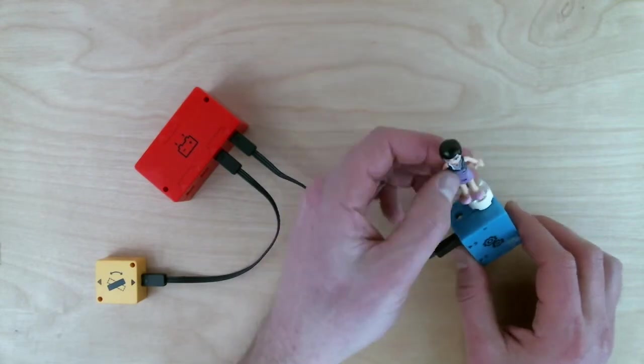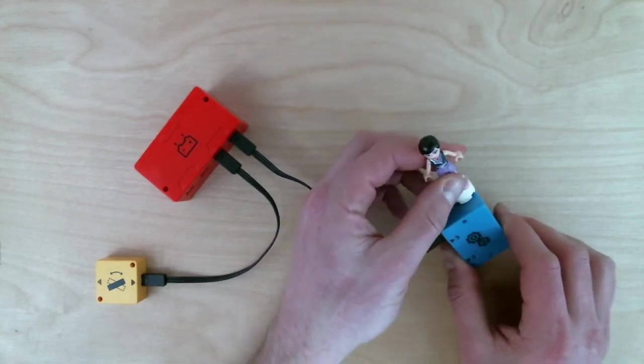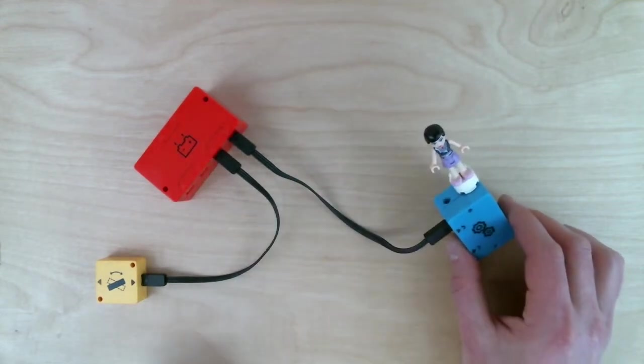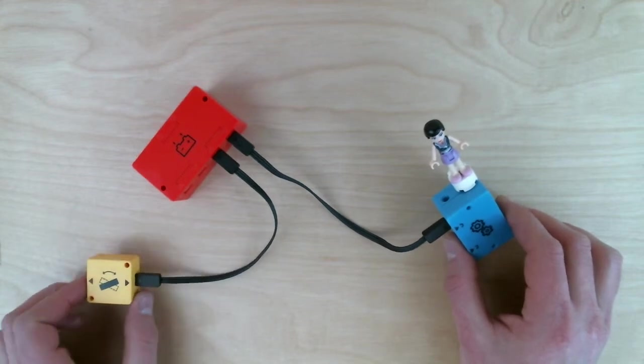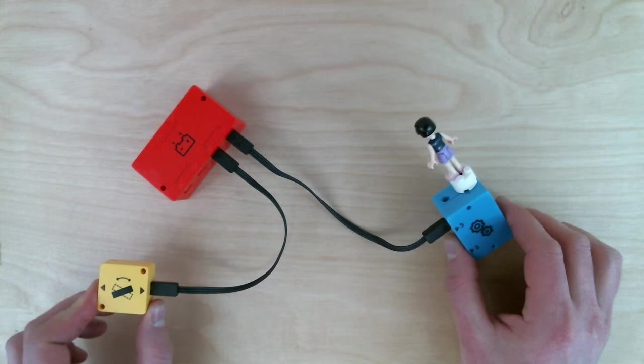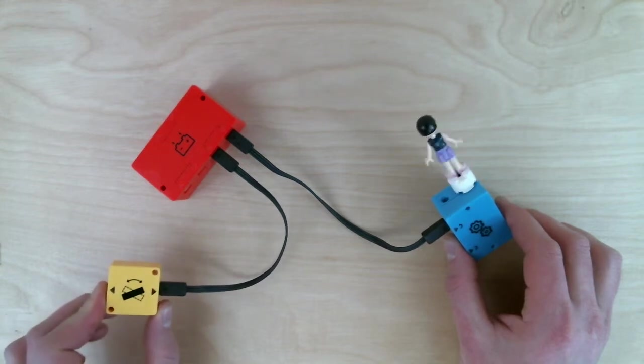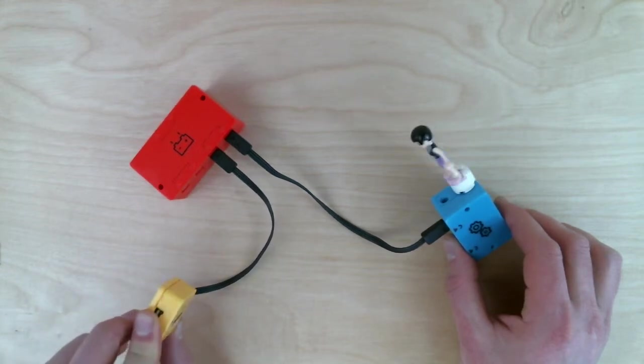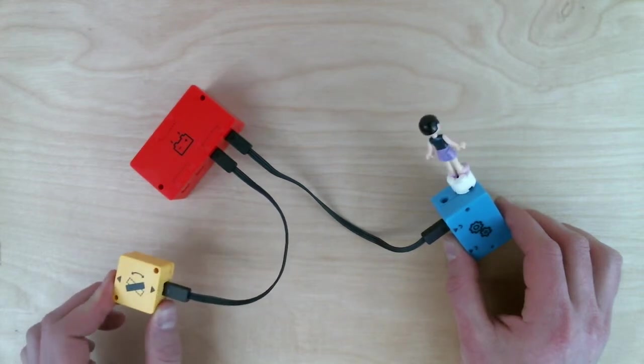Then we'll have Jennifer stand on the output shaft of the motor so it's easier for you to see the motor moving on camera. Now watch what happens when I tilt this even the slightest bit. Pretty neat, right? It's detecting the tilt.